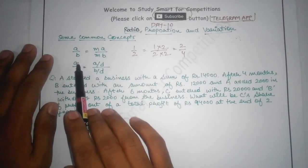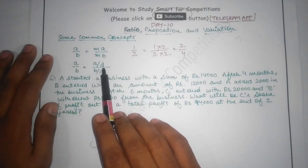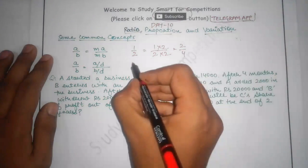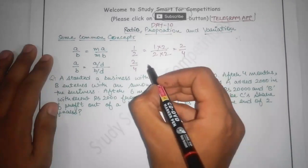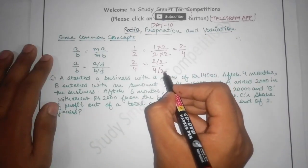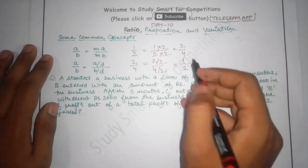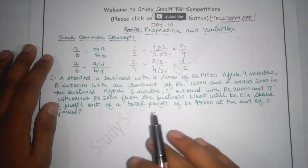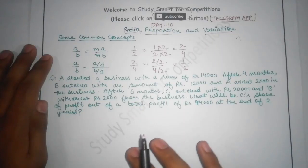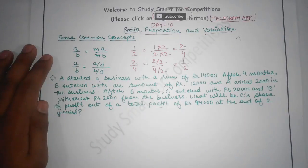Concept number 2 is that if we have a ratio A over B, then (A divided by D) divided by (B divided by D) will also be equal. For example, with 2 by 4 and dividing by D equals 2, we get 1 over 2 — same result. Everybody knows this concept but may not know how to use it.